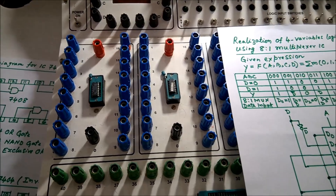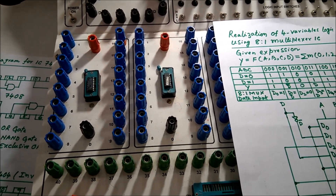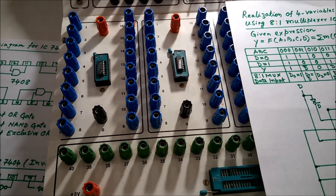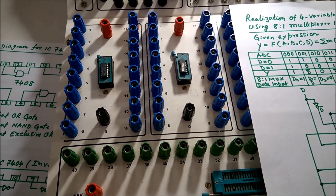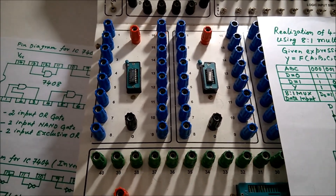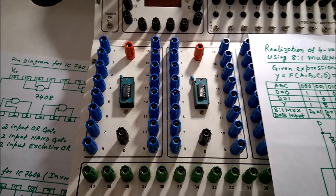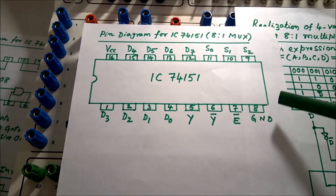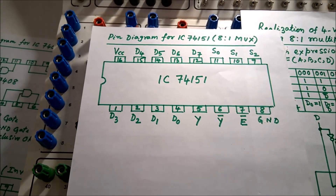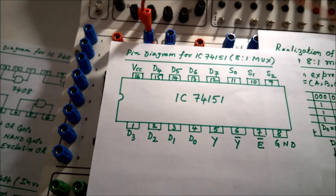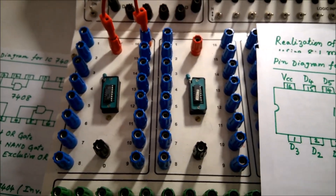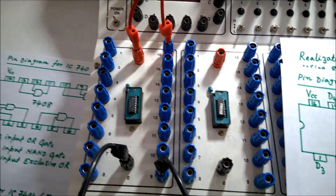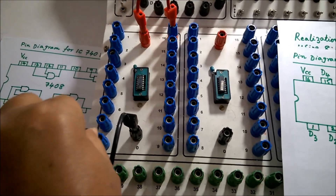Before connections, first connect VCC and ground. For the 74151, pin 16 is VCC and pin 8 is ground. Connect pin 16 to VCC and pin 8 to ground. You can verify this from the pin diagram of the 74151.